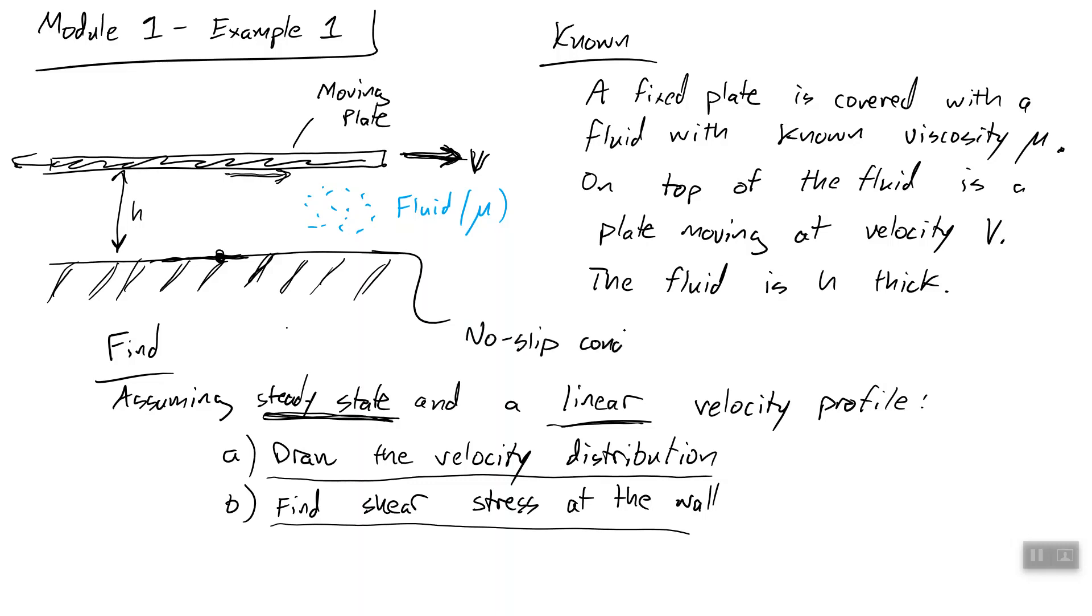The no-slip condition tells us that the fluid will assume the velocity of any solid it is touching at the solid. So the fluid at the wall is not moving, whereas the fluid touching this plate is going to be moving along with the plate. It's stuck to the plate. So this fluid is moving at a velocity of v.